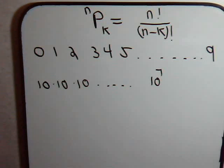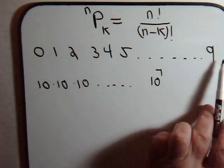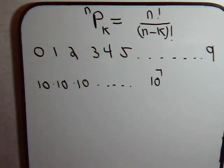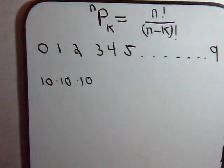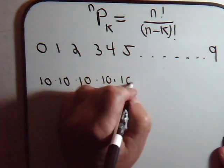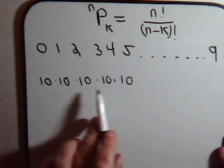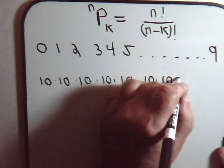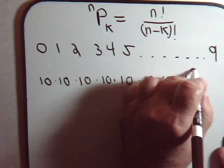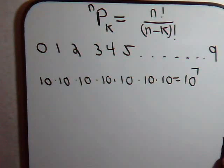So how many ways can we form 7 digit telephone numbers from these 10 different digits? The answer is 10 to the seventh. So in this case, it's just 10 times 10 times 10 times 10, 1, 2, 3, 4, 5, like this.